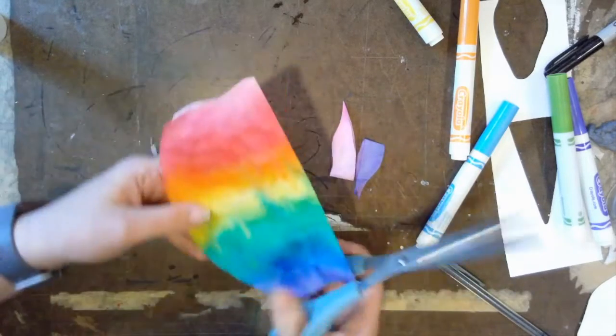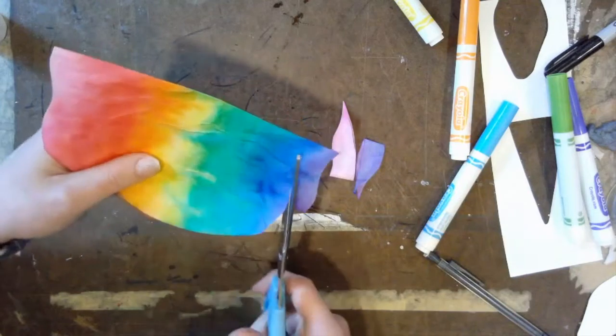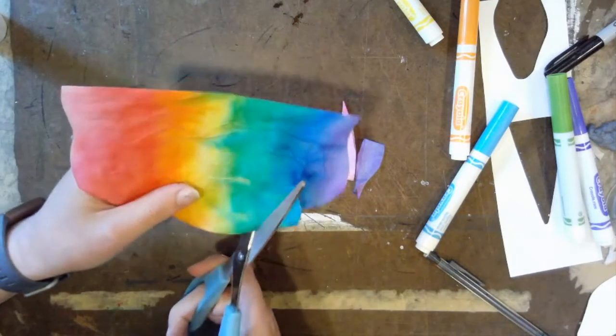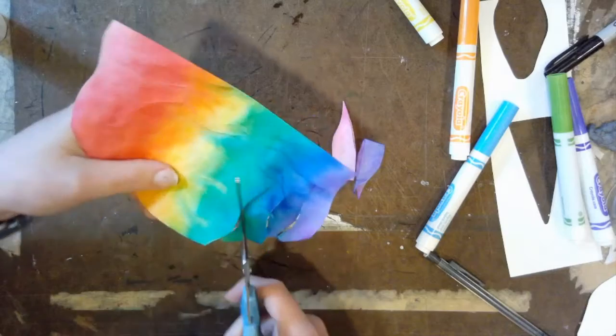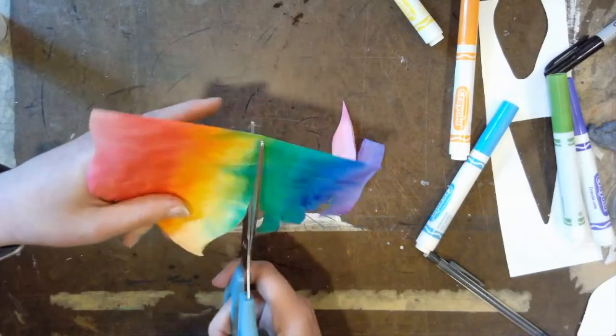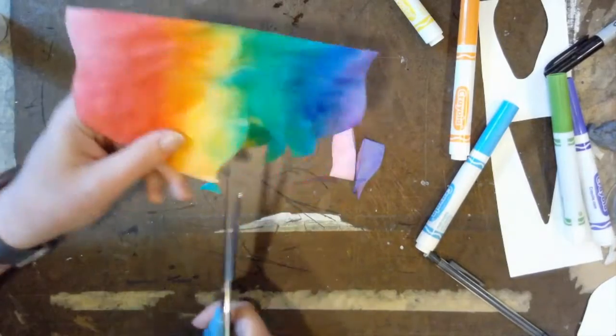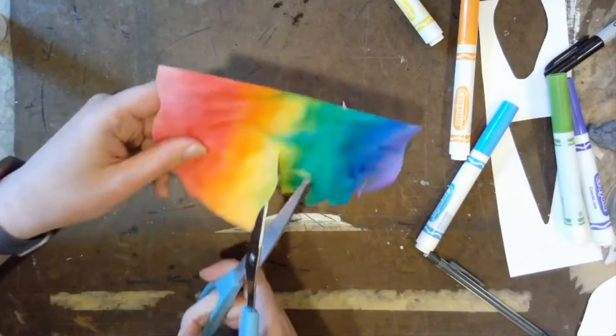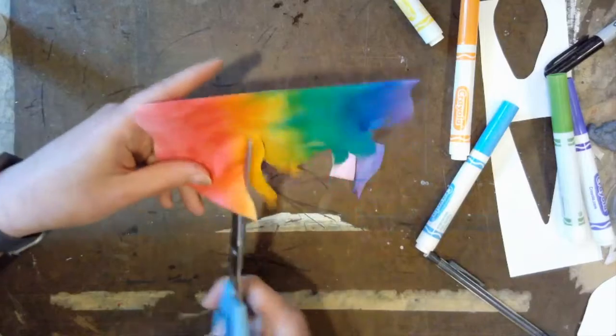On the open side, we're going to cut some wavy fringe. So I'm just making wavy line cuts. Some of our tissue paper might get cut off. That's fine. We'll use those scraps as well. Make sure you're cutting on the open part. We don't want to cut where the crease is.